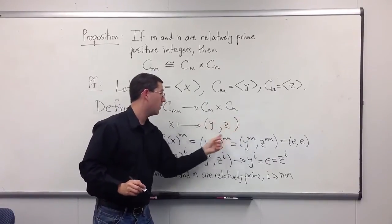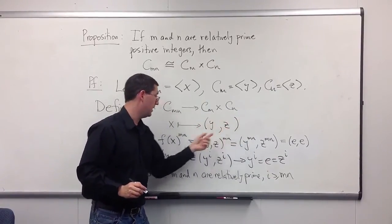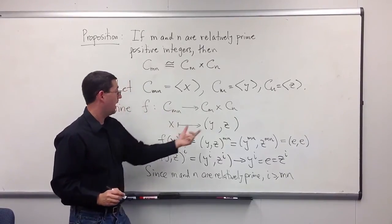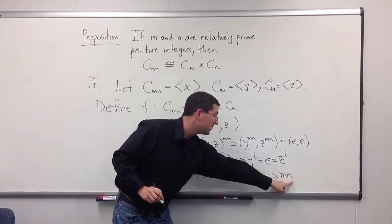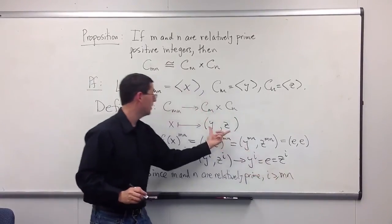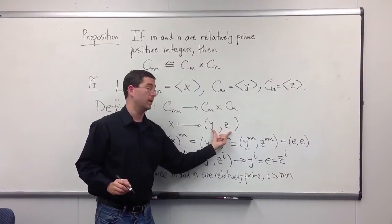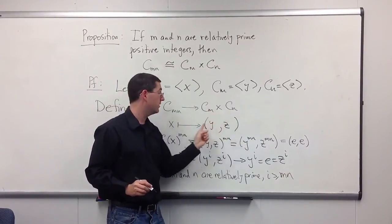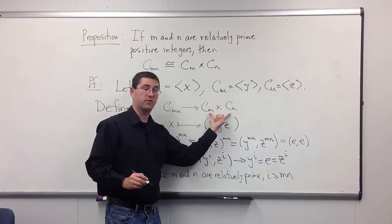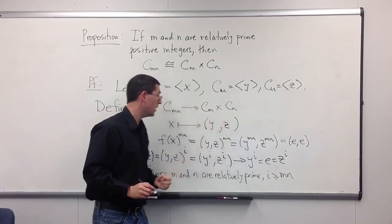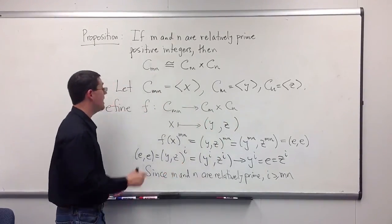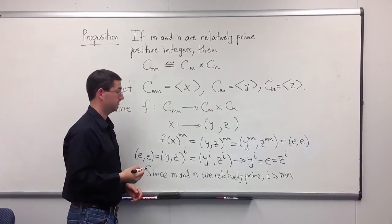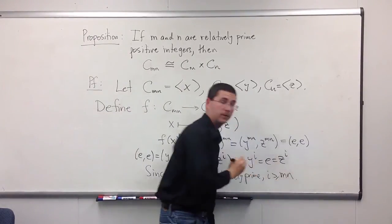And so every power of (y, z) is in the image of the map f, and we're getting m times n elements in the subgroup generated by (y, z). But this group has m times n elements, so (y, z) is actually a generator for C_m cross C_n. This tells you f is not only a homomorphism but an isomorphism. And that completes the proof.